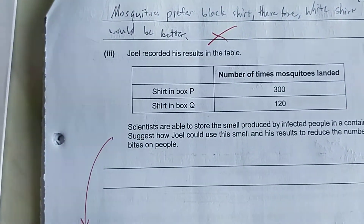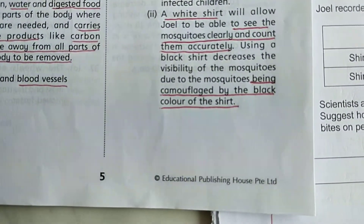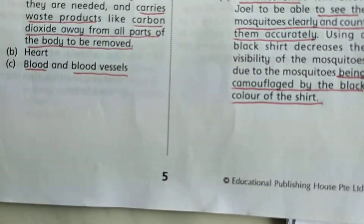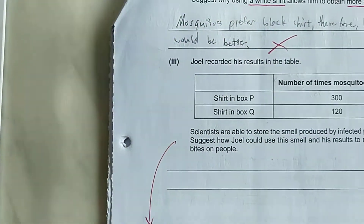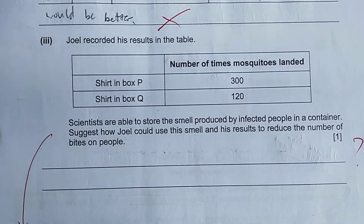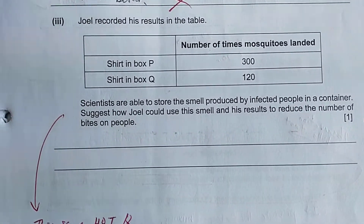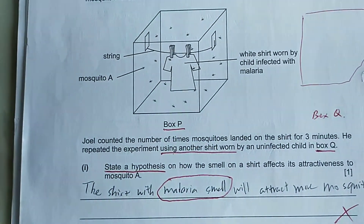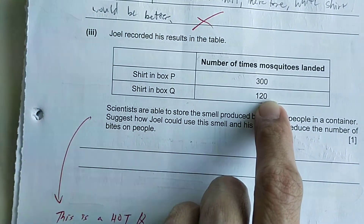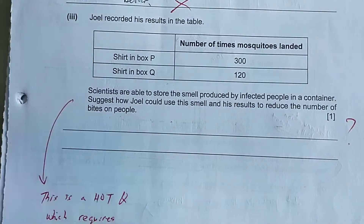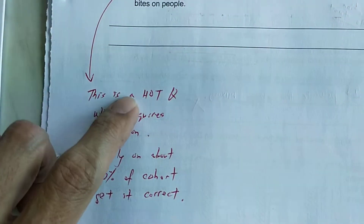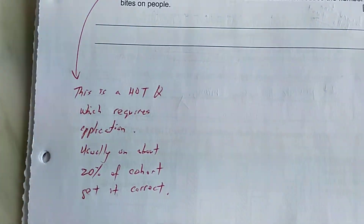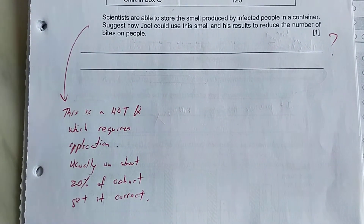A comparison is needed here. The student needs to state why white is better compared to black. Black mosquitoes on a white background can be seen and counted more easily compared to using a dark-colored shirt, which makes the mosquito less visible. This is a higher order thinking question, and I believe less than 20% of the cohort of about 39,000 to 40,000 P6 students will get it correct.